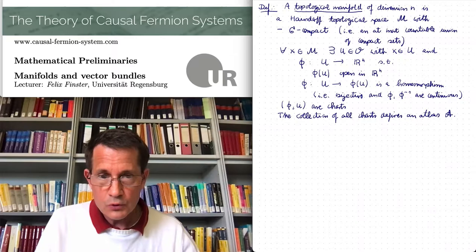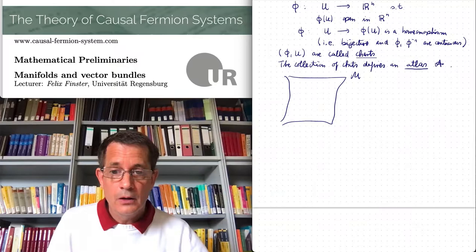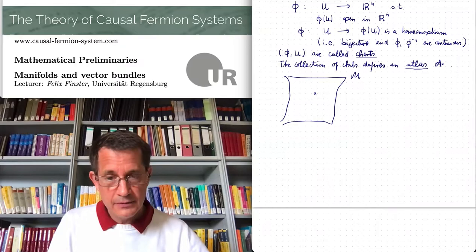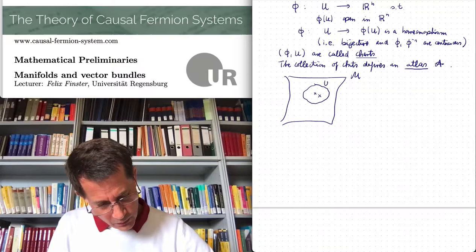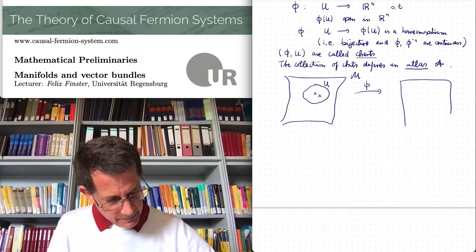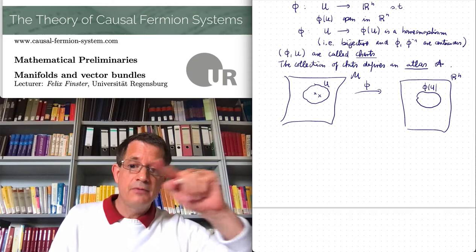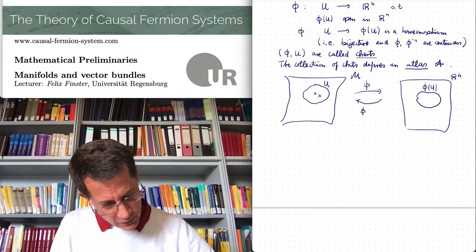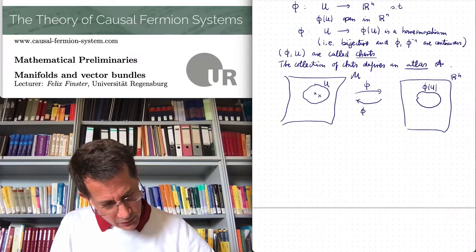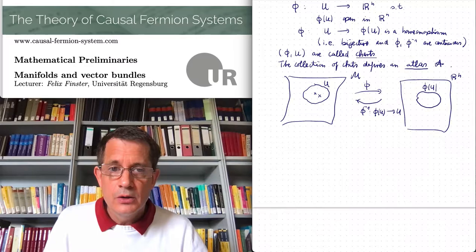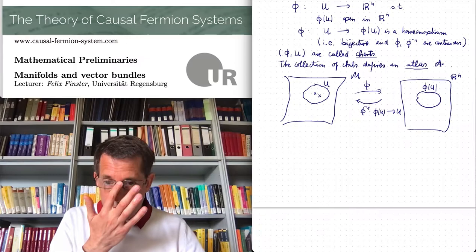Let me illustrate this by drawing a figure. Suppose this is our topological space curly M. The condition is that for every point X, there is an open neighborhood U, and the mapping phi maps to R^n — in fact to an open subset of R^n. This mapping phi is invertible; phi to the minus one maps from phi of U back to U. All these mappings should be continuous. This is a topological manifold.